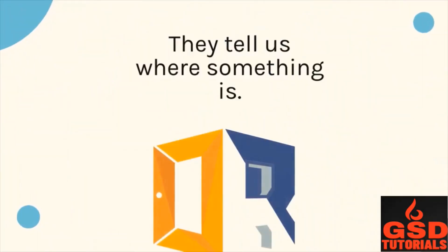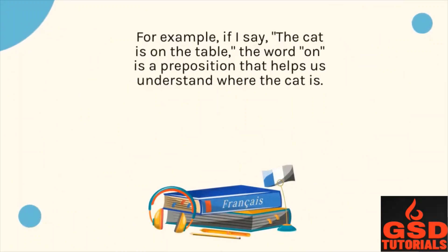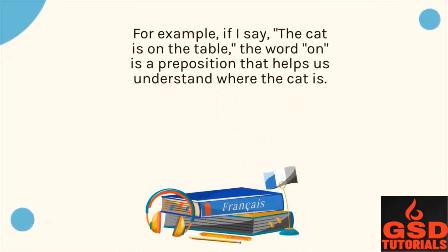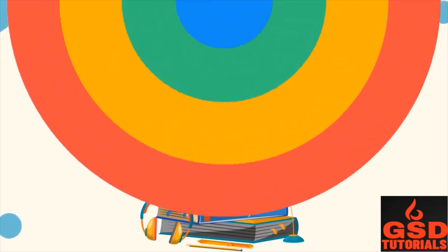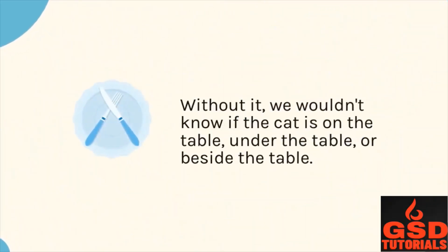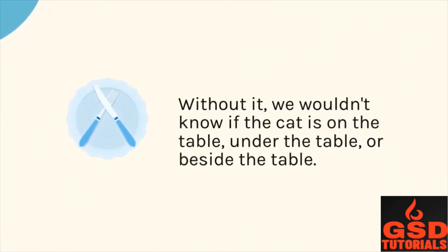They tell us where something is. For example, if I say, the cat is on the table, the word on is a preposition that helps us understand where the cat is. Without it, we wouldn't know if the cat is on the table, under the table, or beside the table.